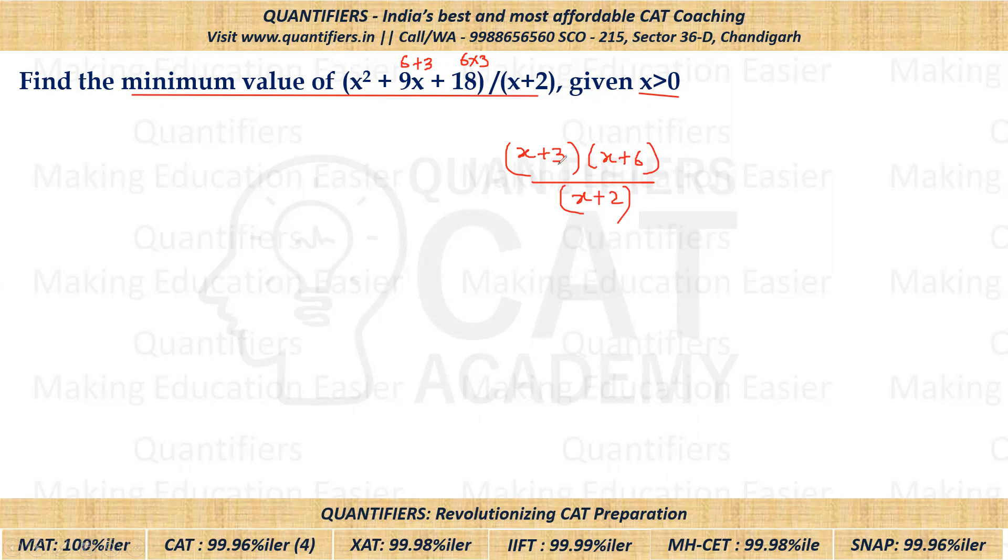Now students, we can see that x+3 is one more than the denominator. Similarly, x+6 is 4 more than the denominator. So what I am doing is I am assuming the denominator to be equal to T.